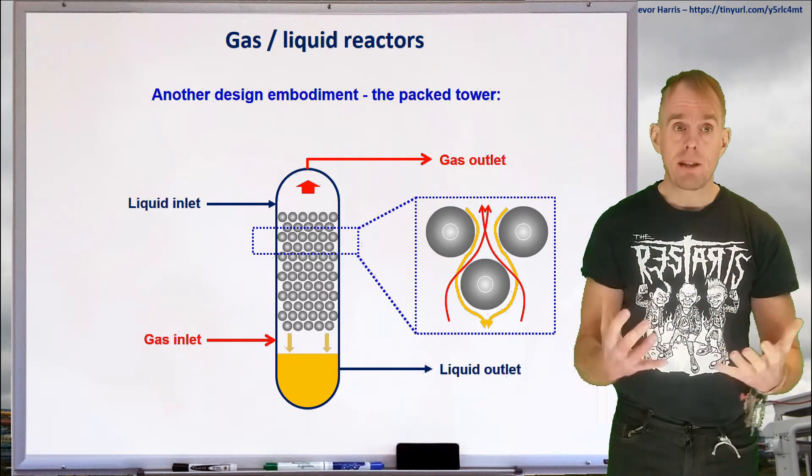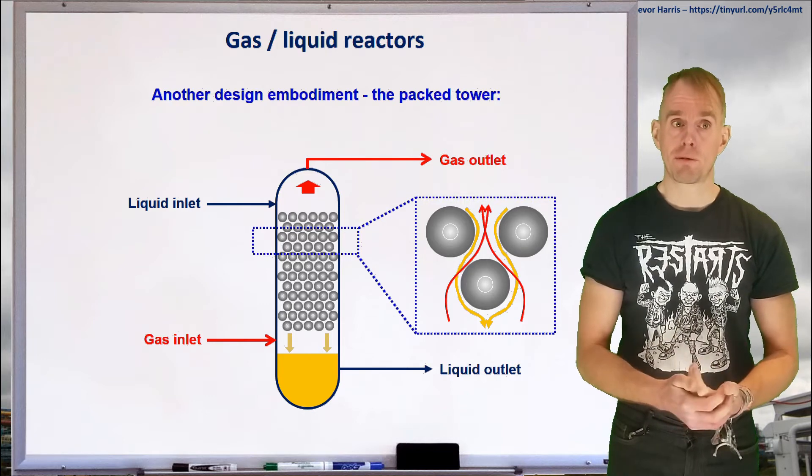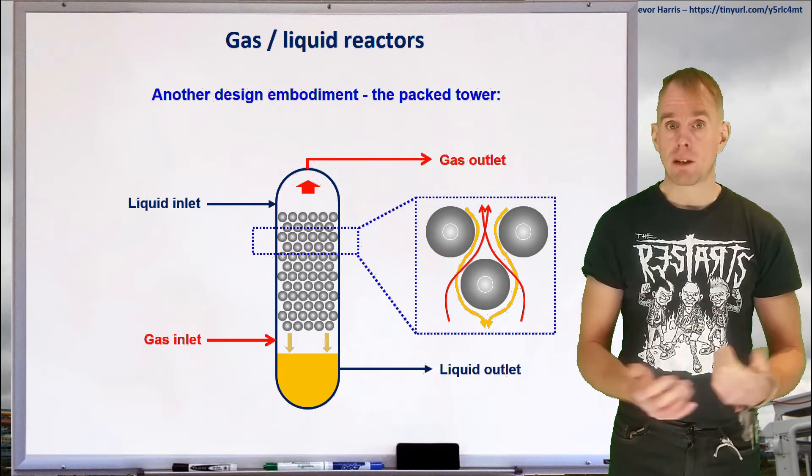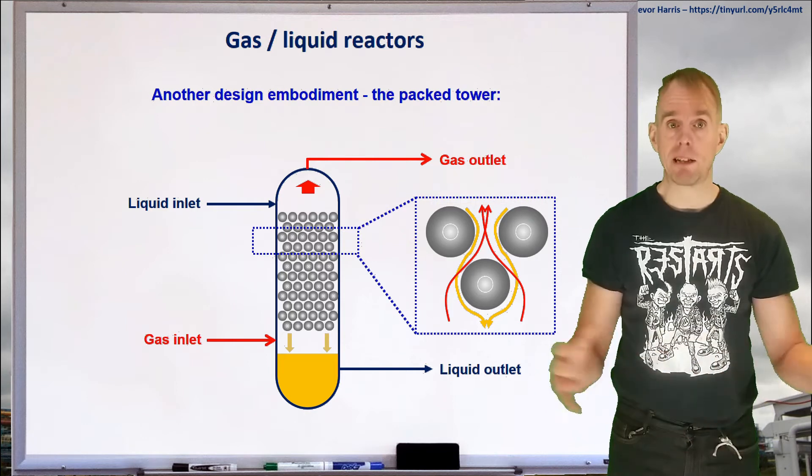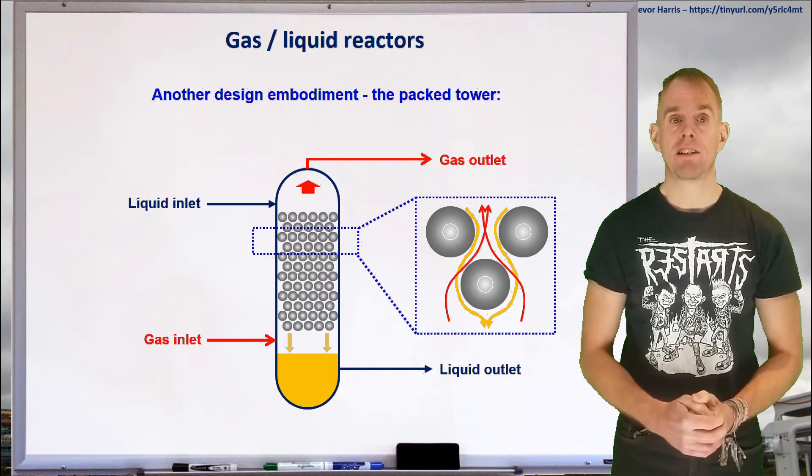And again, these columns can suffer from hydraulic problems such as flooding. And if your superficial gas velocity is simply too high, make your column wider, drop your superficial gas velocity down.